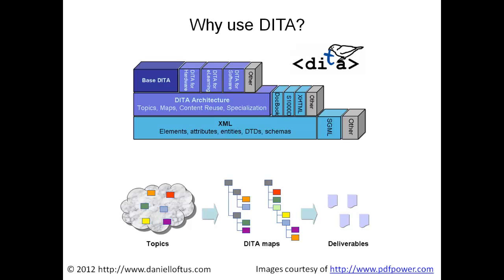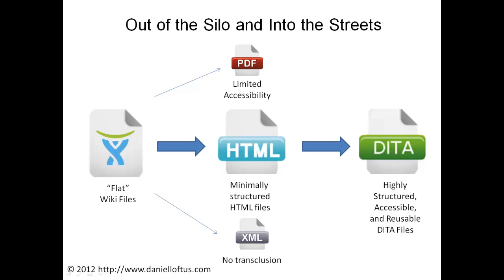Anyone can use DITA simply by downloading the DITA Open Toolkit from the web. The DITA Open Toolkit can be used with an XML editor to produce output in many formats. It consists of several types of files including Java files, Apache files, XSL and XML files, and a native XSLT processor that recognizes and transforms the XML files into different formats.